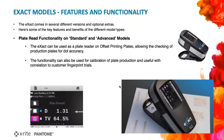A couple of slides now on some extra functionality you may not have been aware of. In the exact basic plus, standard, and advanced models, you also have the configurable option of using the device as a plate reader on offset printing plates. You can check production plates for dot accuracy, and you can also back-calibrate certain plates into specific fingerprint trials that you've run. There's a link at the end of this webinar to a specific white paper on how to configure your device to do that.